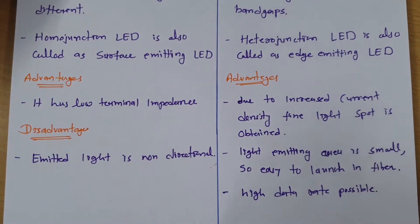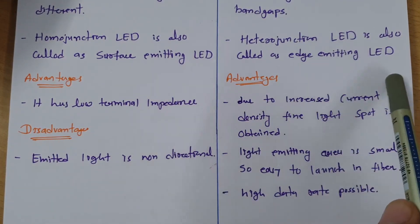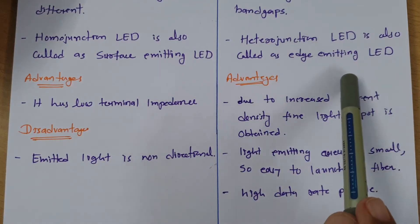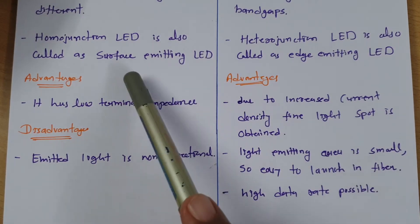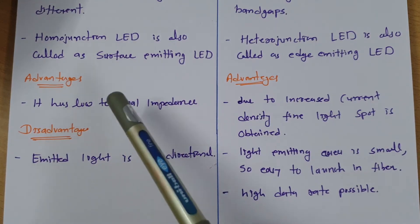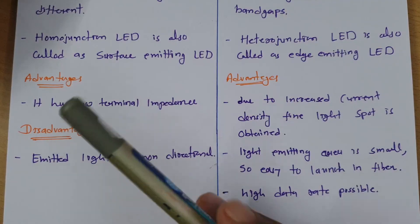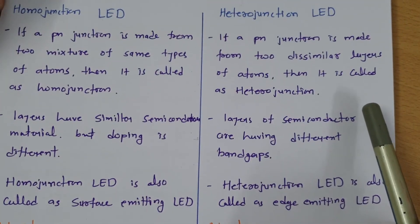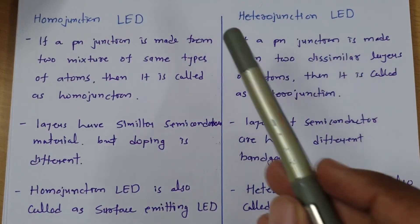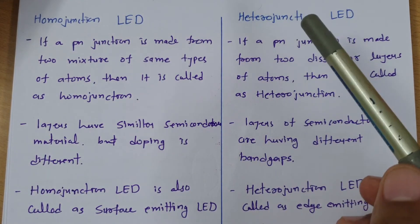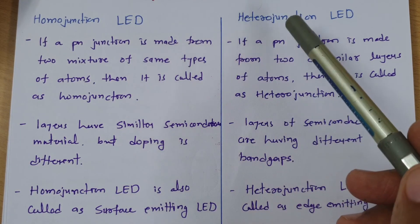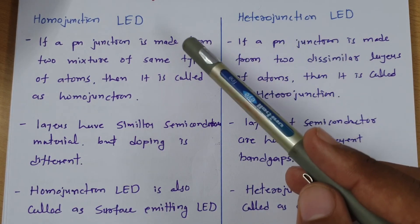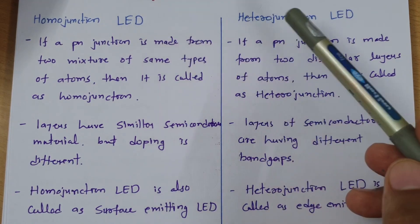In detail, we will have separate sessions for surface emitting LED and edge emitting LED, where we will see structure-wise how things are happening and how light is getting emitted. This session is to clarify the meaning of homo junction and hetero junction, because these terminologies come up in basic electronics and students often get confused. Once you know their meaning, you will be able to answer correctly in examinations.